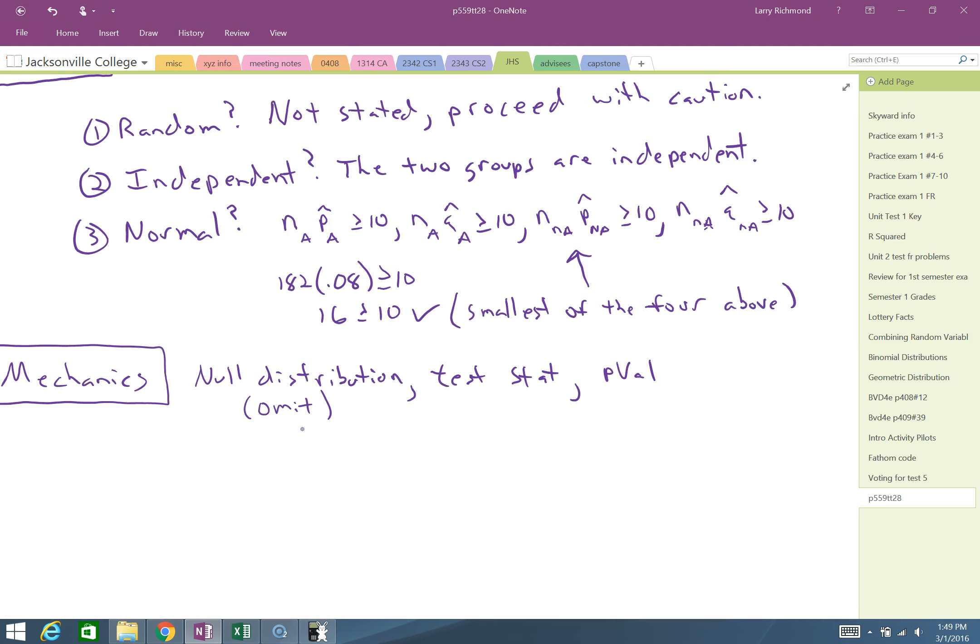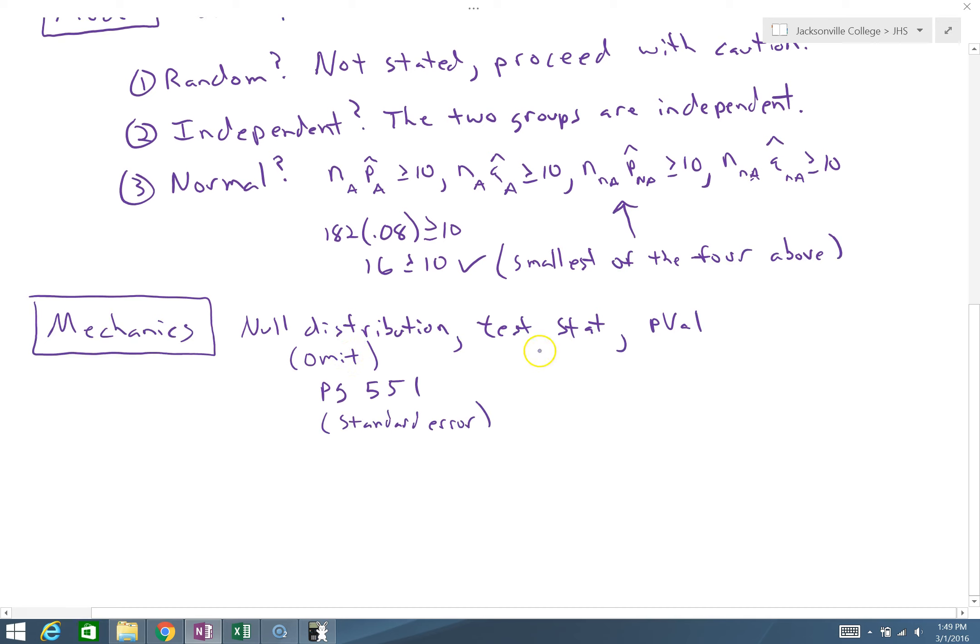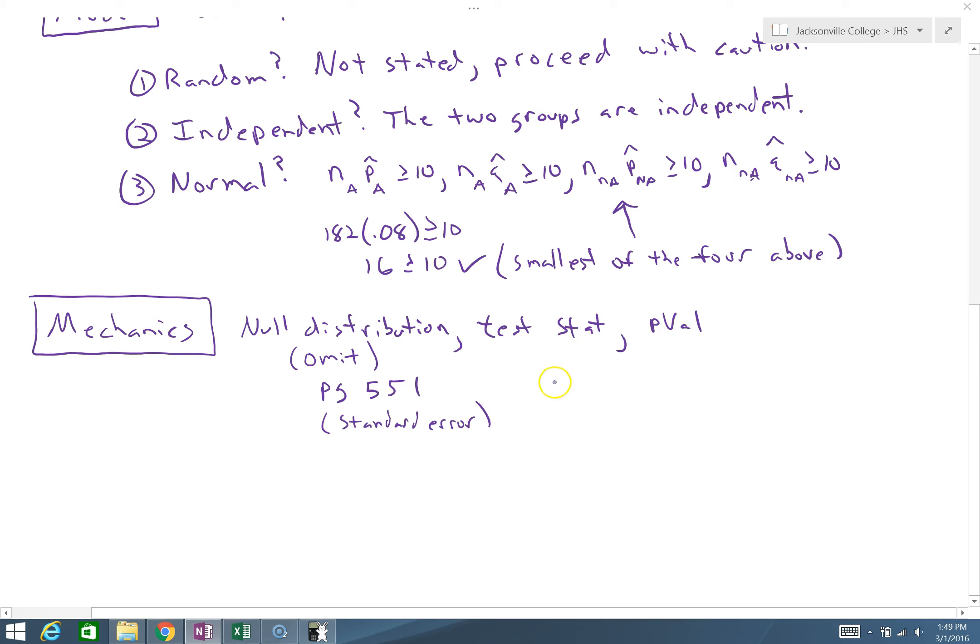Check the example on page 550, 551. This will specifically talk about calculating the standard deviation or the standard error of our statistic. But just in terms of us reducing the amount of things we're having to write here, for our two sample tests, we're going to omit that null distribution. So all we need is our test statistic and our p-value. We know the test stat is going to be a z, and we can simply use our calculator to find this value.